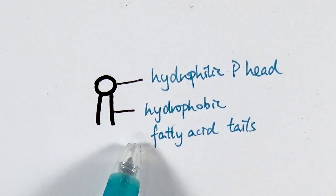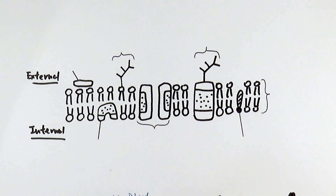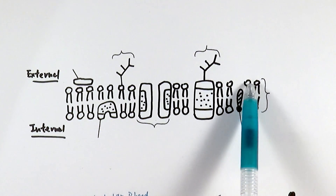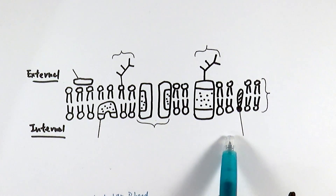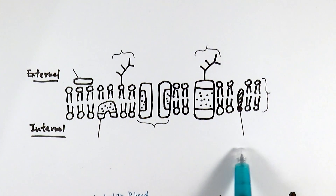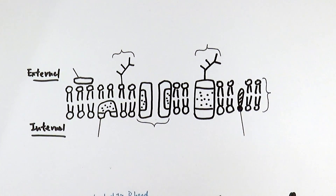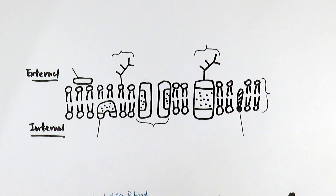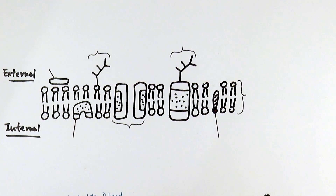These two properties basically ensure that the bilayer is formed. Because the hydrophilic heads don't mind water, they face outwards or inwards toward the watery environment. Whereas the tails, because they're hydrophobic, they shield themselves away from the water, forming what we call a hydrophobic core. Because there are two layers of them, we call this whole structure the phospholipid bilayer.